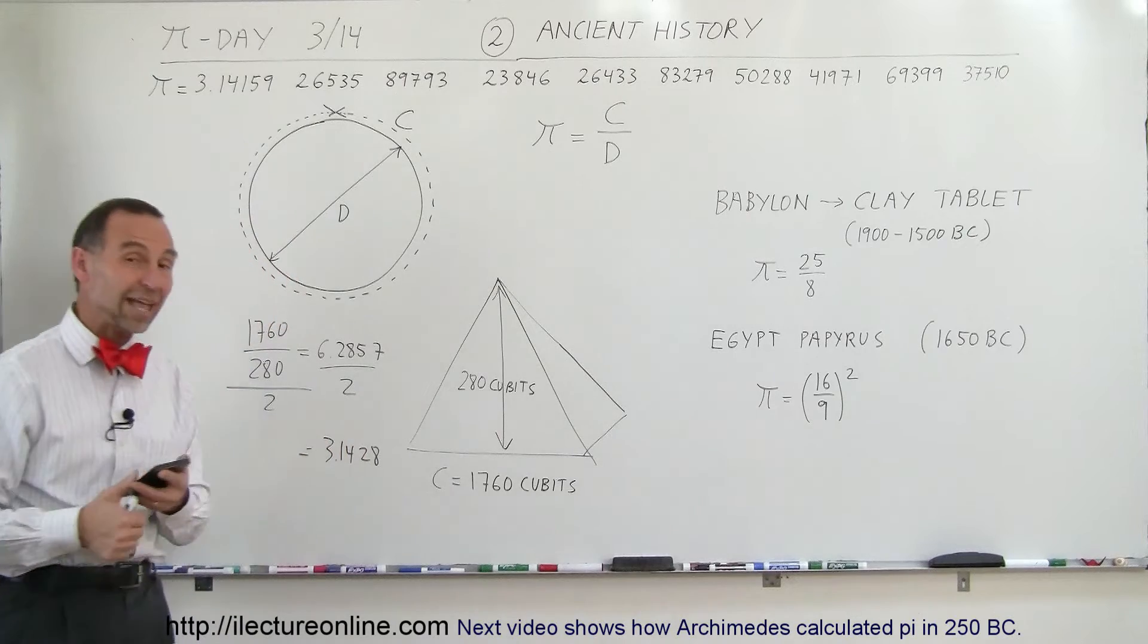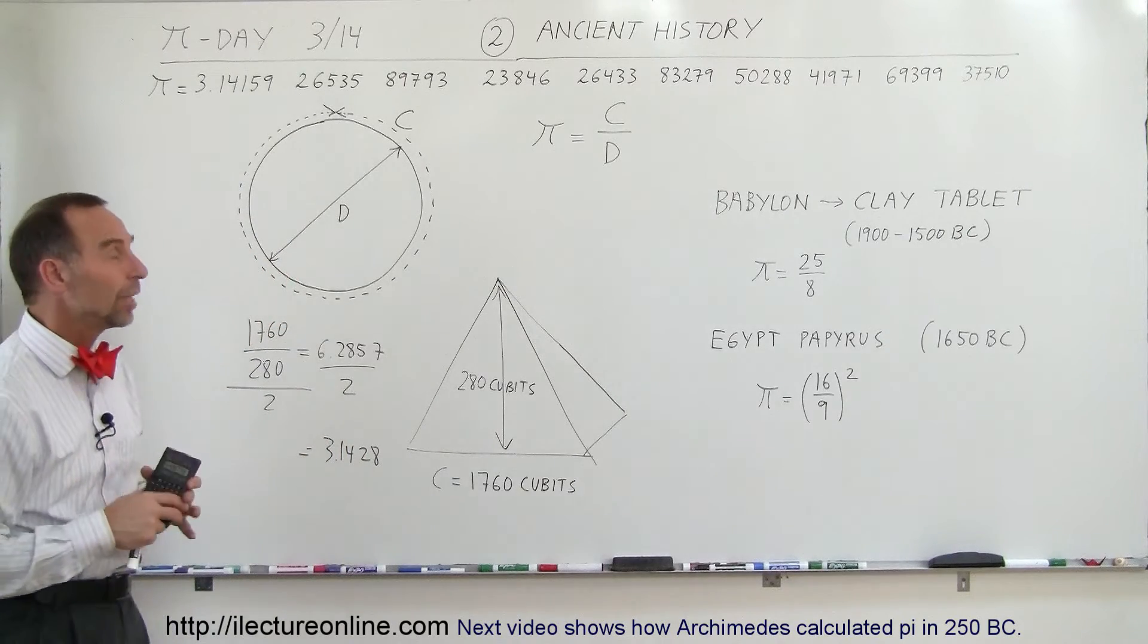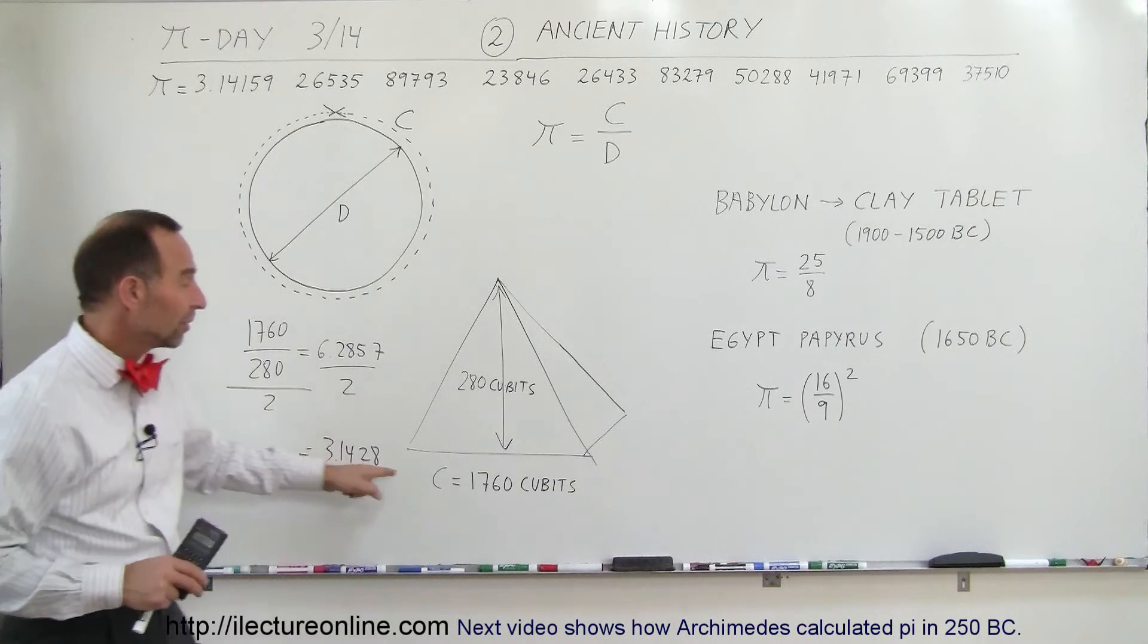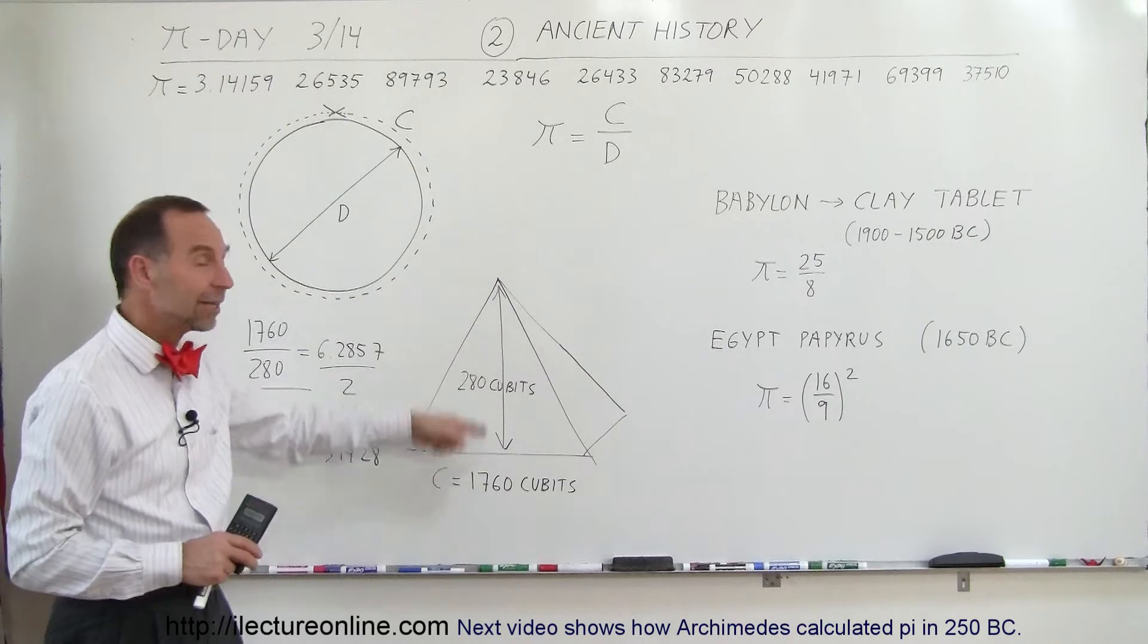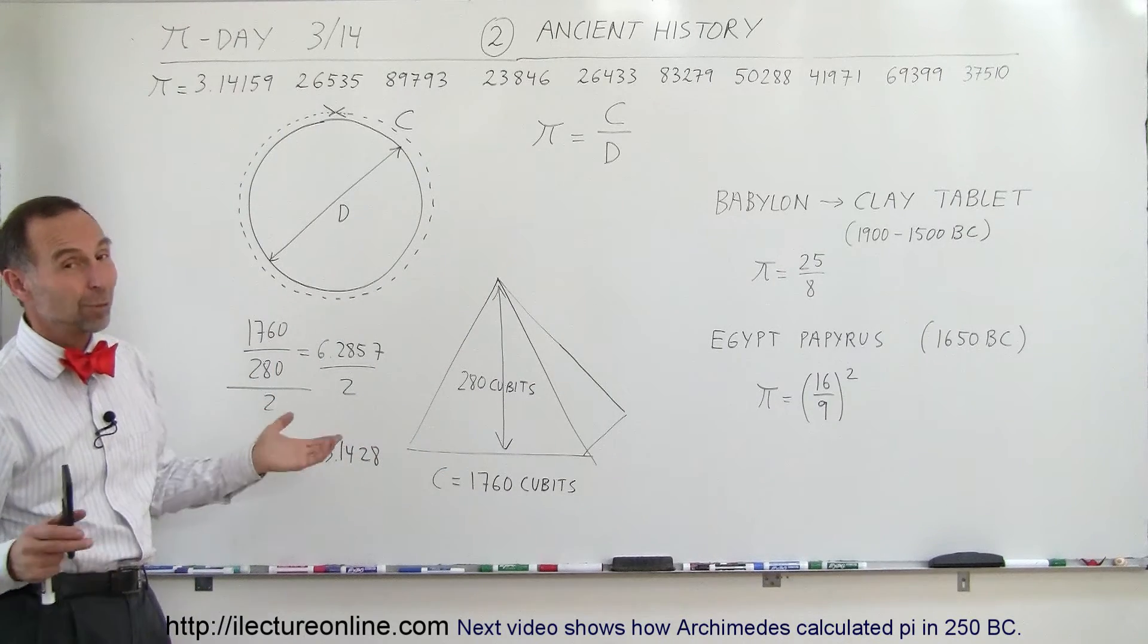We'll take a look at that in just a moment. Notice that the ratio of the circumference of the base to the height of a pyramid was exactly equal to 2π. Coincidence? Who knows?